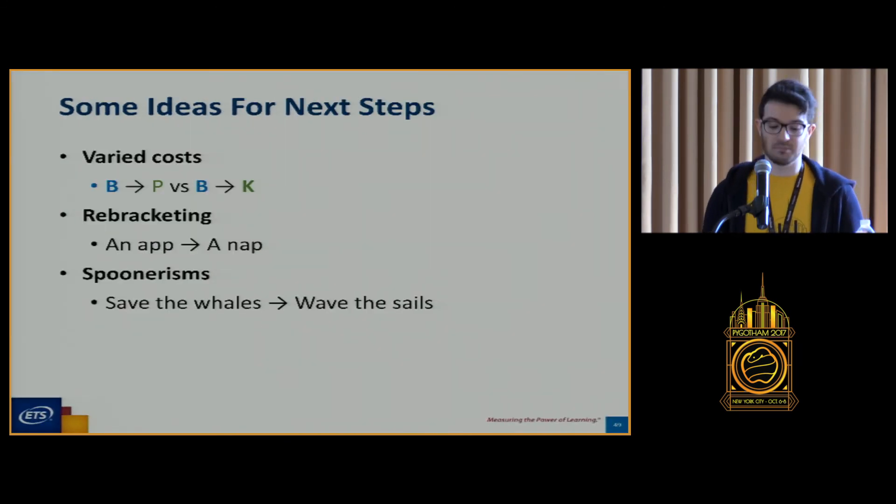There are some ideas for improvements. One is to vary the cost. If we're going from the letter B to the letter P, or the sound bah to puh, we might want to make that less than the sound bah to cuh. Those are much different sounds. They're made in different parts of our mouths. We might want to try something like making some kind of thing that takes into account re-bracketing. An app sounds a lot like a nap, right? But our algorithm is currently only looking at single words at a time. Spoonerisms are also a fun thing to play with. Save the whales could be wave the sails, right? We're just rearranging two of the sounds in that. Possible things to add for next steps.